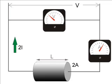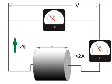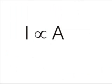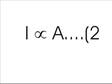If we further increase the cross-section of the conductor, the current will increase accordingly. If we observe carefully, we will find that the change in current through the conductor is directly proportional to its cross-sectional area. That means I is proportional to A. Say this is equation 2.